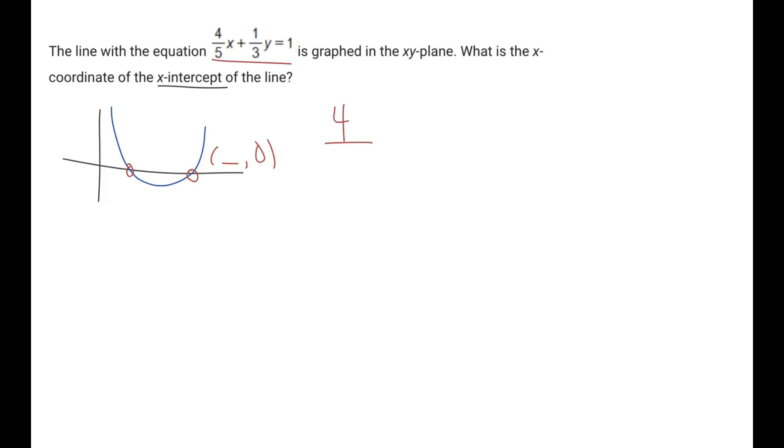So then we have 4/5x plus 1/3 times zero, which is zero, equals one. Now we can solve for x because y was zero, which means we're solving for the input that gives us zero as y. And this is a function.